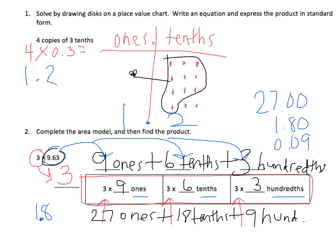And I added zeros as place value holders so that I can line up all my decimals. 0 plus 0 plus 9 is 9. 0 plus 8 plus 0 is 8. 7 plus 1 plus 0 is 8. And bring down the 2. Bring down the decimal.